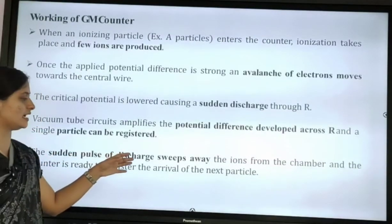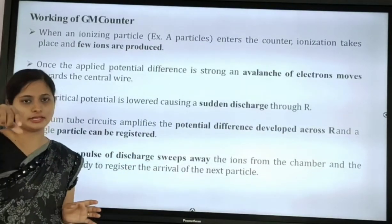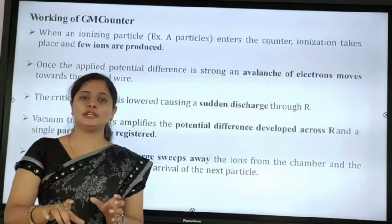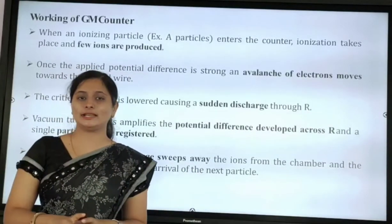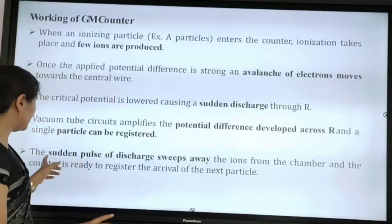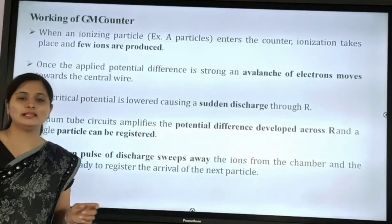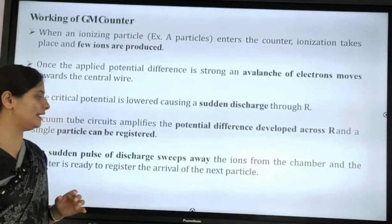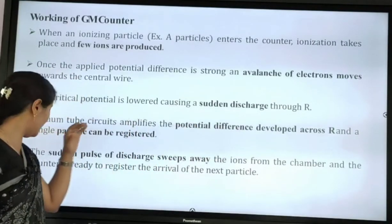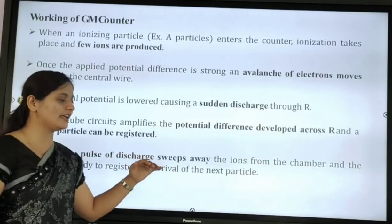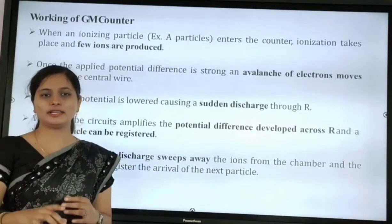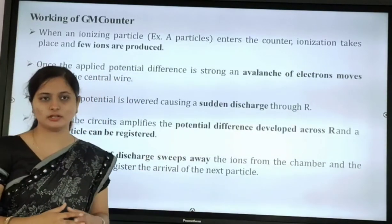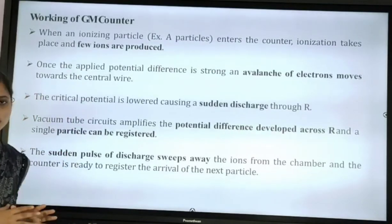Fifth, the sudden pulse of discharge sweeps away the ions from the chamber, and the counter is ready to register the arrival of the next particle. So after counting one particle's radiation, it allows the next particle in — this is how the GM counter continuously counts radiation.